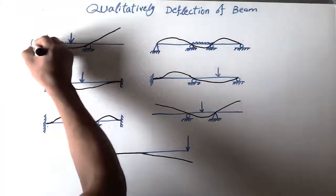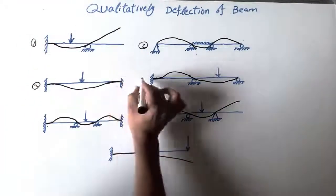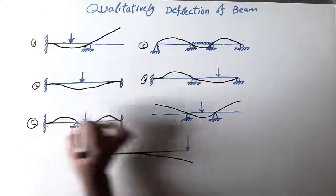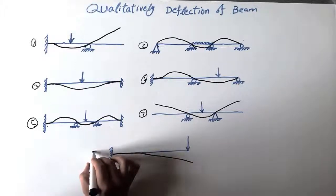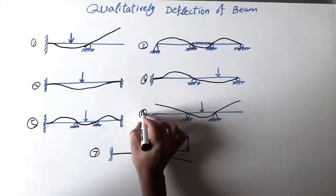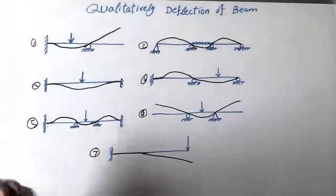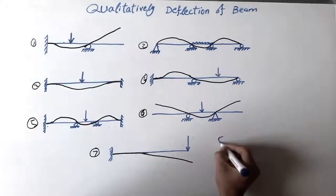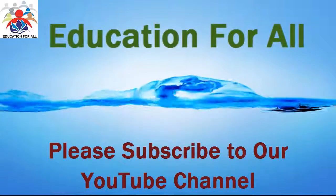Let me number these beams: one, two, three, four, five, six, and seven — so there are seven beam types in total. That's it for today. Thank you for watching, please don't forget to subscribe. See you next time.